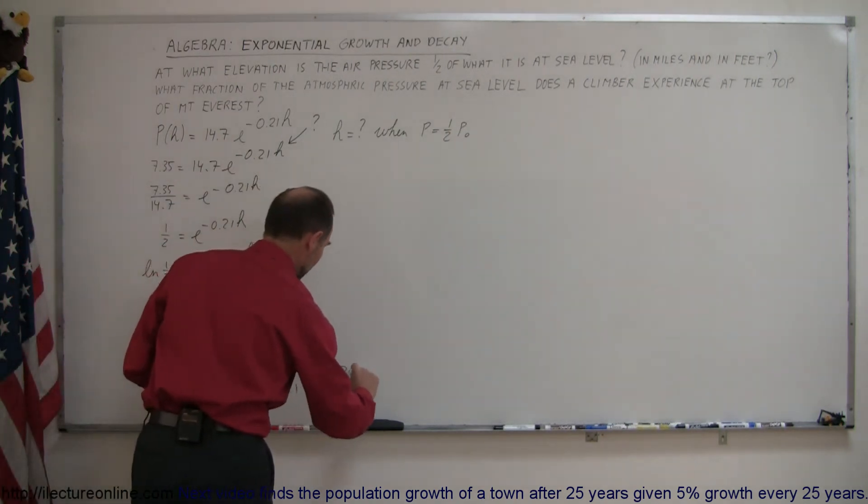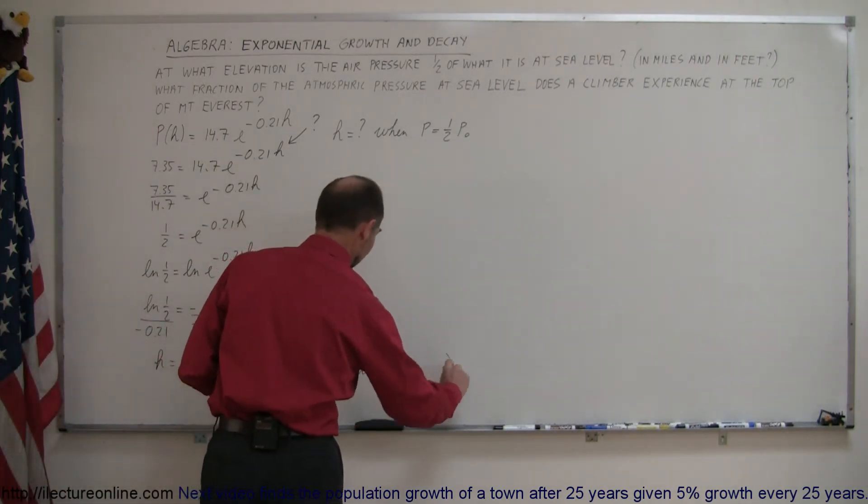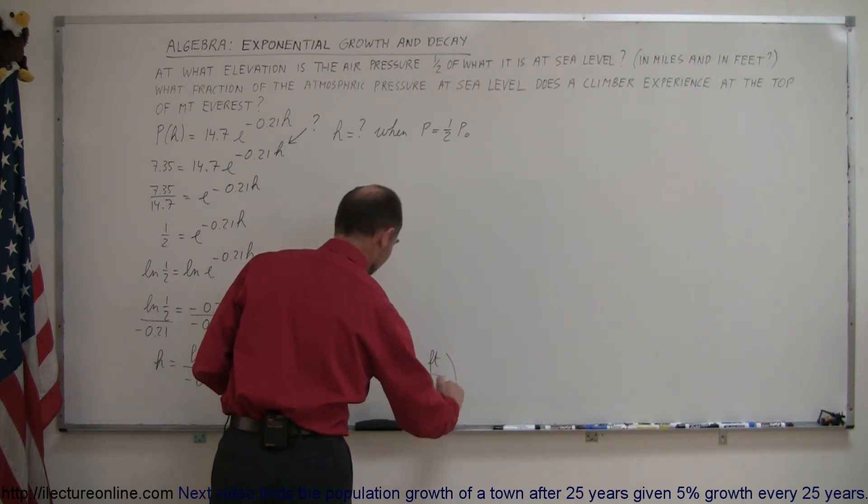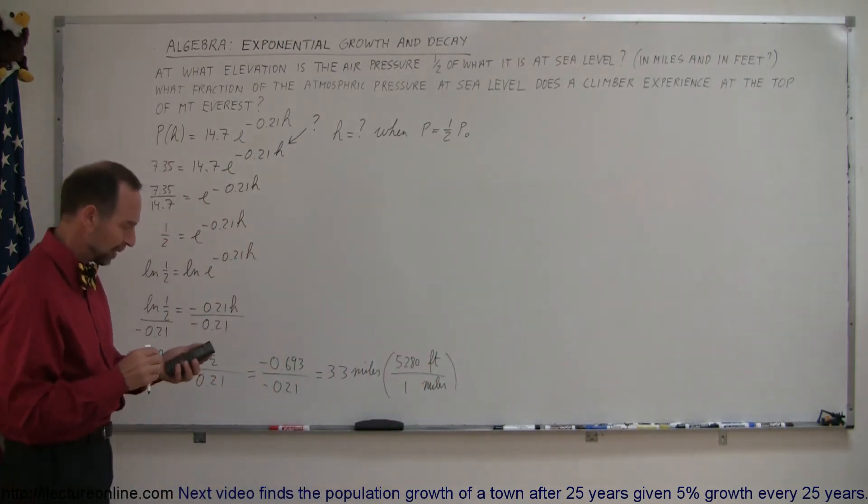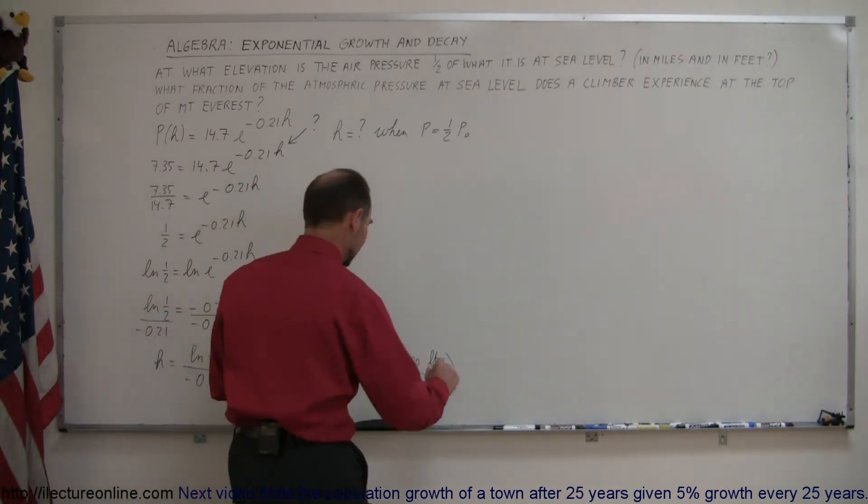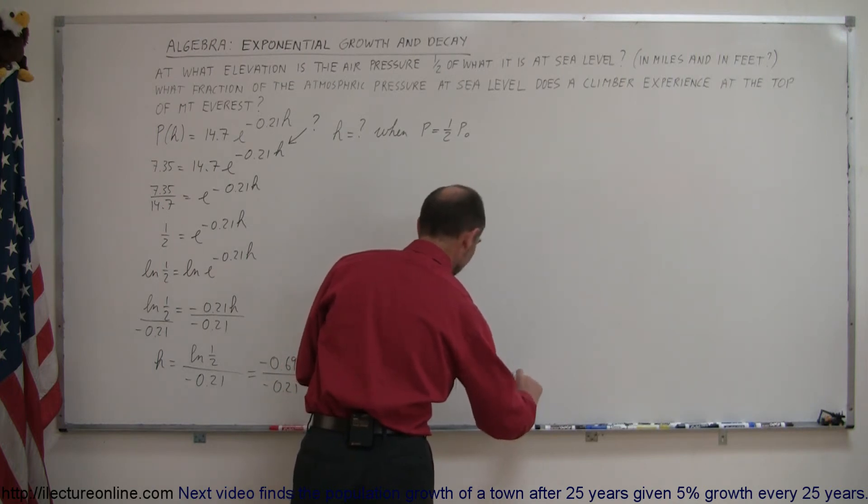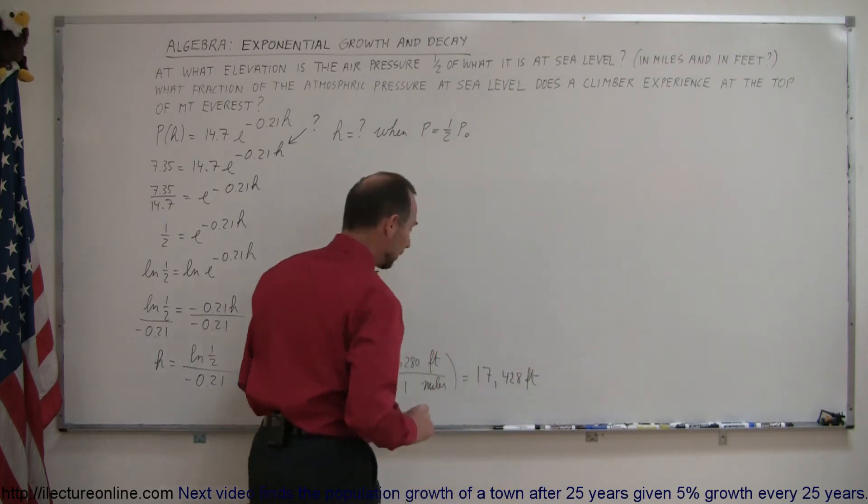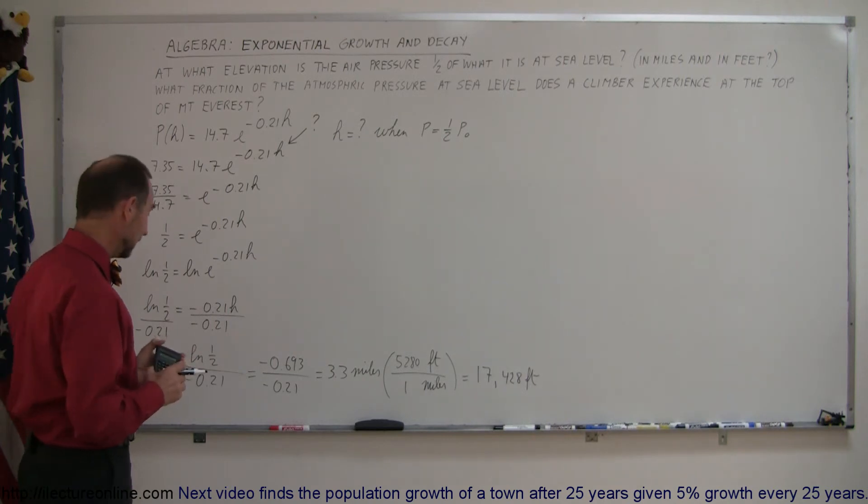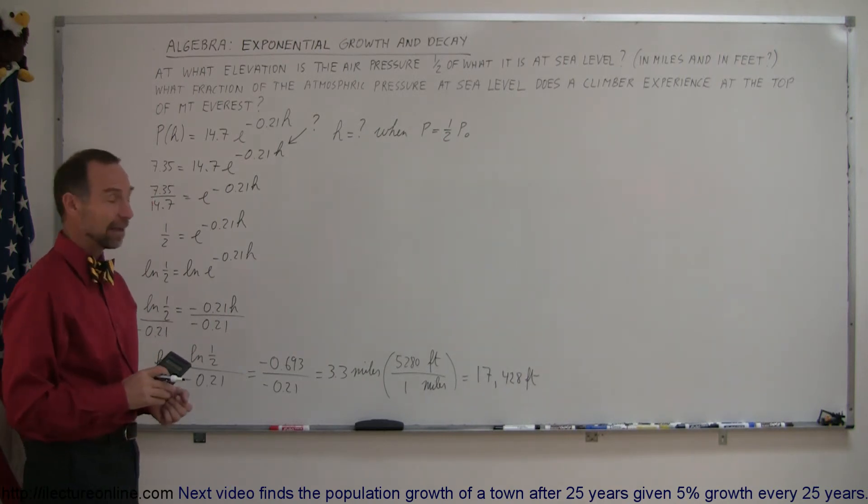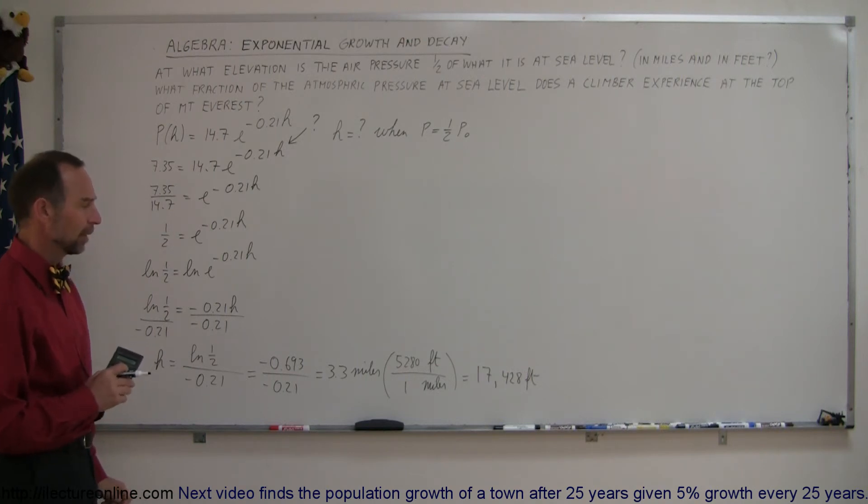How high is that in feet? The conversion factor to go from miles to feet: one mile is 5,280 feet. Multiply 3.3 times 5,280 and we get a total height of 17,428 feet. That's quite high. Once you pass 17,500 feet, you're now at less than half the atmospheric pressure at sea level.